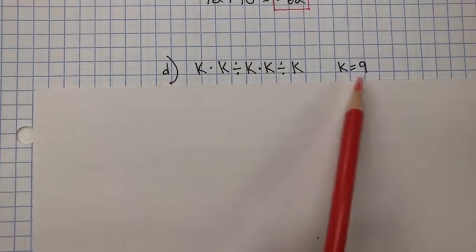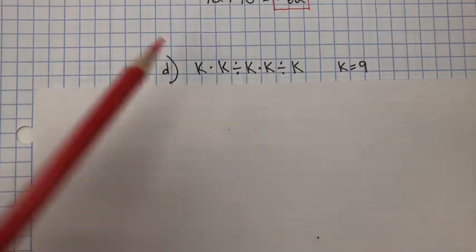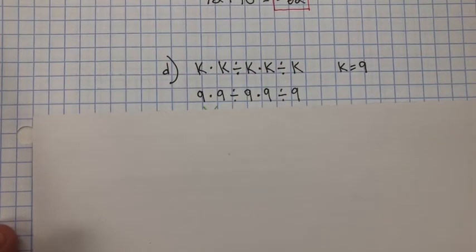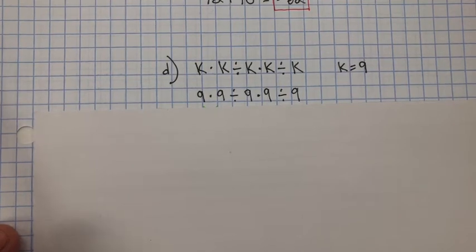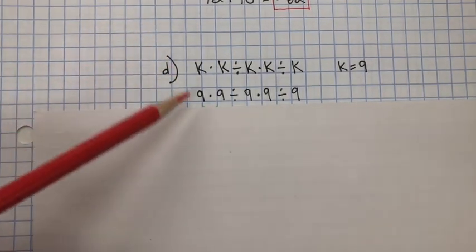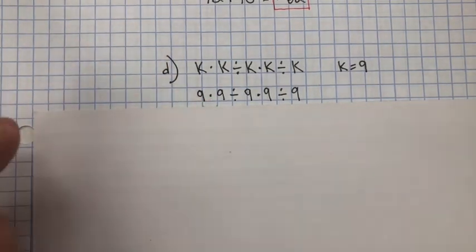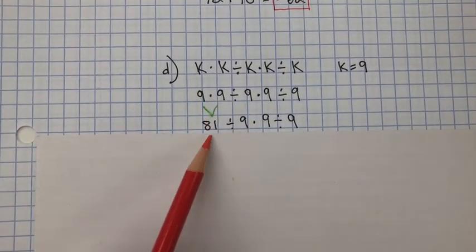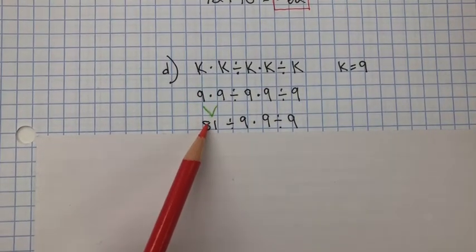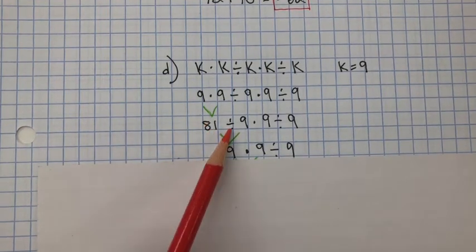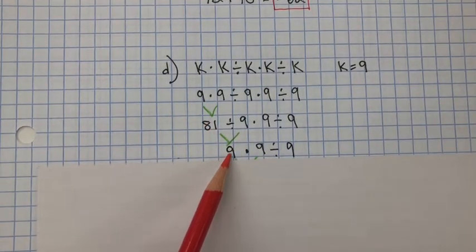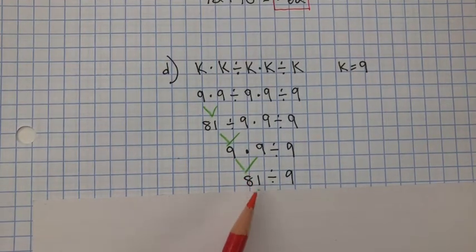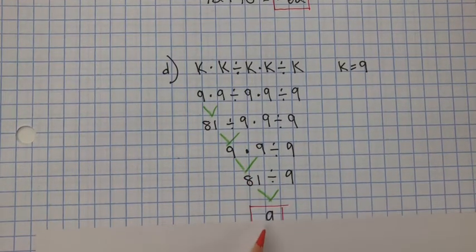In D, k equals 9. So for all of these variables, I'm going to substitute the value 9. We need to follow the order of operations — multiplication and division from left to right. 9 multiplied by 9 is 81. 81 divided by 9 is 9. 9 multiplied by 9 is 81. 81 divided by 9 is 9.